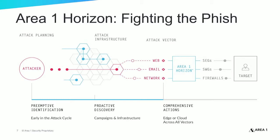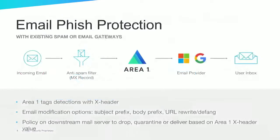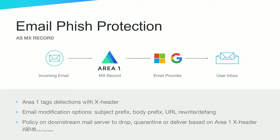The Area 1 Horizon service is easy to deploy as an added layer of protection with your existing email, web, and network security infrastructure. For email phish protection, when added behind a legacy secure email gateway, the service detects phishing email and tags detections with an X-header. The downstream mail server then takes policy action — whether to drop, quarantine, or deliver the email — based on the X-header value. The service can also be deployed in front of cloud email services such as Office 365 and Google G Suite to protect from targeted phishing attacks that cloud office security technologies frequently miss.